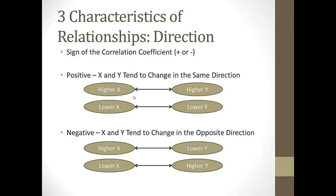Direction is the second characteristic of relationships. For our purposes, assuming a linear relationship, the heart of what the correlation coefficient tells us is direction and strength. This is all about the sign of the correlation coefficient. If your correlation coefficient is positive, higher values of y tend to be related to higher values of x. If you have a negative relationship, higher values of x tend to be associated with lower values of y. The correlation coefficient will either be positive or negative — negative means changing in opposite directions, positive means changing in the same direction.